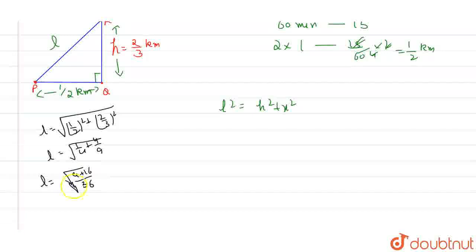So this will come out as l should be 5 by 6 km. So our l should be 5 by 6 km, this is 5 by 6 km.